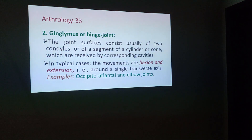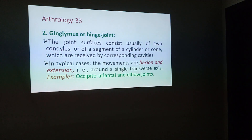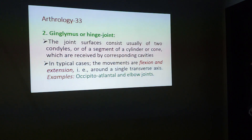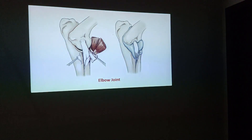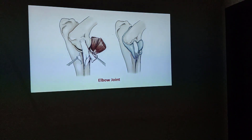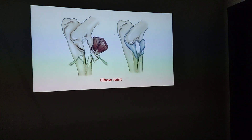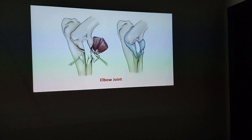The second class is condyloid joints, or hinge joints. These consist of usually two condyles or a segment of a cylinder or cone which are received by corresponding cavities. The typical movements are flexion and extension around a single transverse axis. Examples include the occipito-atlantal joint and the elbow joint, which can only move in two directions — extension or flexion — in two planes.